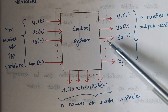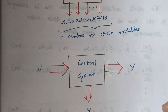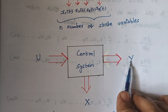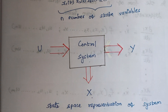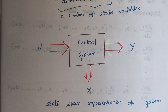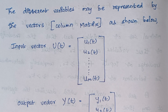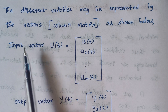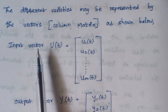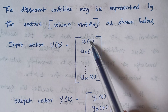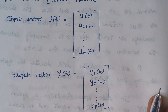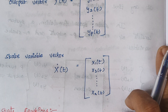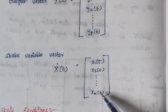In simplified form, the system is represented where U denotes input variables, Y denotes output variables, and X denotes state variables. This is known as the state space representation of a system. The different variables are represented in the form of a matrix — specifically a column matrix. The input vector U(T) contains U1, U2 up to UM. The output vector Y(T) contains Y1, Y2 up to YP. The state variable vector contains X1, X2 up to XN.